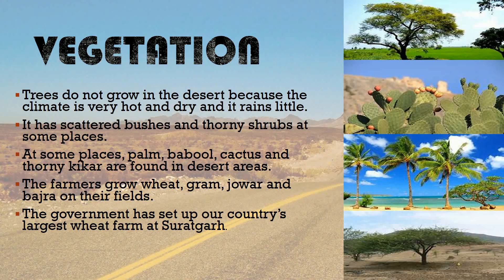Now let's learn about vegetation. Trees do not grow in the desert because the climate is very hot and dry and it rains little. It has scattered bushes and thorny shrubs at some places. At some places, palm, babul, cactus, and thorny kicker are found in desert areas.